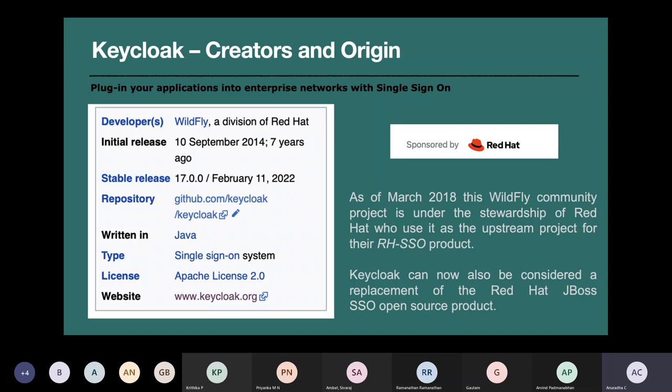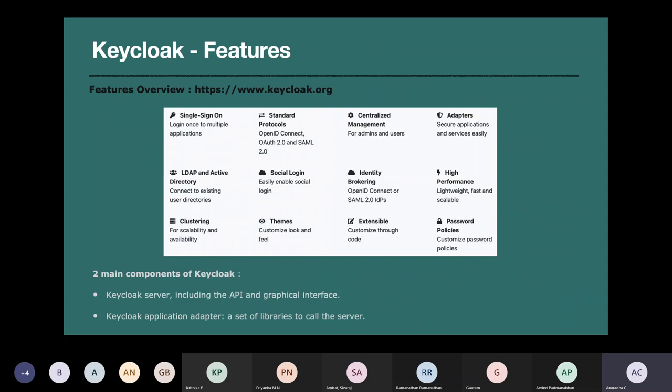Keycloak is now considered a replacement for the SSO open source setup of JBoss. It's free and open source. Most present-day libraries focus on one factor: very little or no code when talking about system integration. This is also a library where there is very little coding — if at all, it's only JSON configuration. Hardly any coding involved.